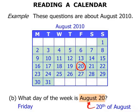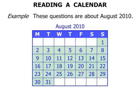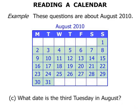What date is the third Tuesday in August? Well there's our Tuesday column. That's the first Tuesday, the second, and the third. So we're after the third. The third Tuesday in August is the 17th of August.